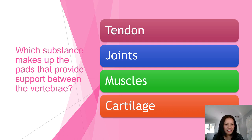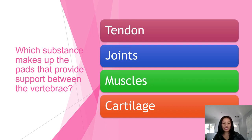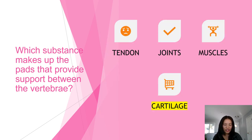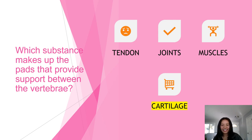Next question: which substance makes up the pads that provide support between the vertebrae? Tendon, joints, muscles, or cartilage? The answer is cartilage, because it provides support between our vertebrae in our backbone.